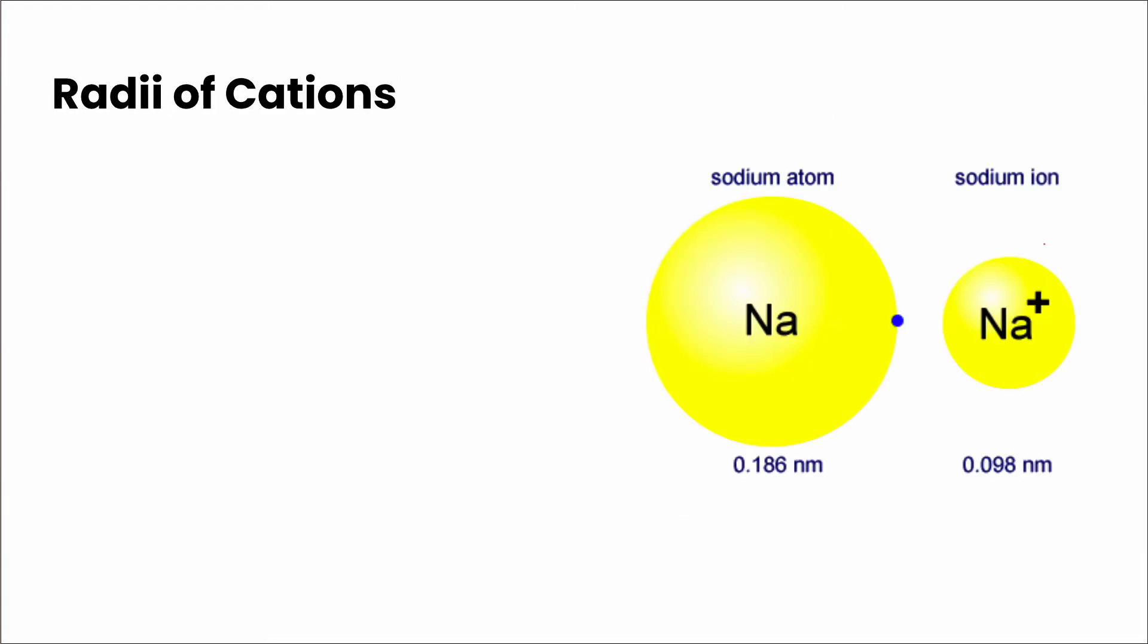If we take a look then at cations or anions, so the ionic radius, ionic radius is measured the same sort of way, but we're looking now at ions versus looking at just a neutral atom.